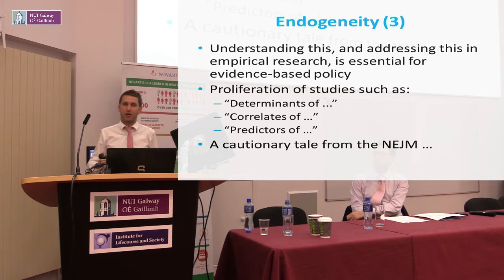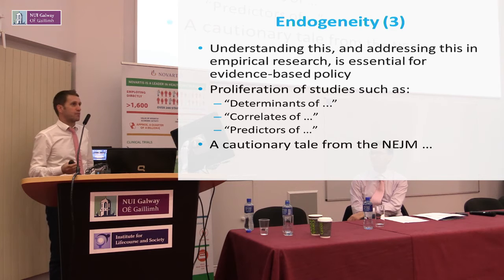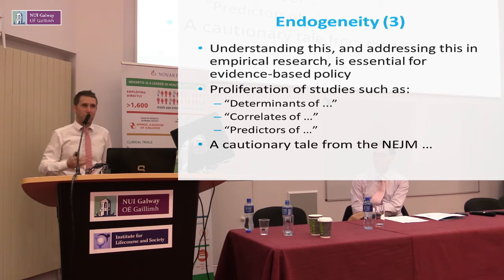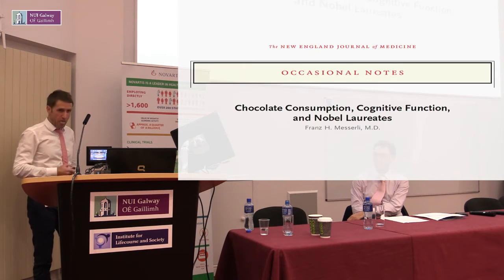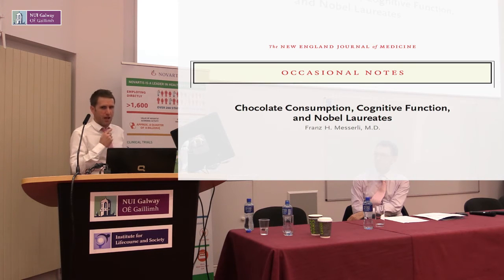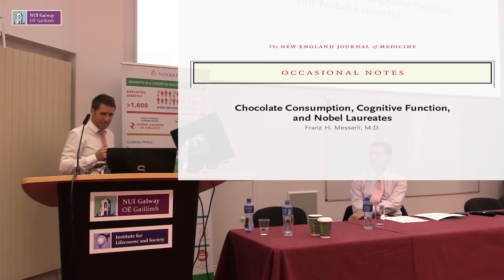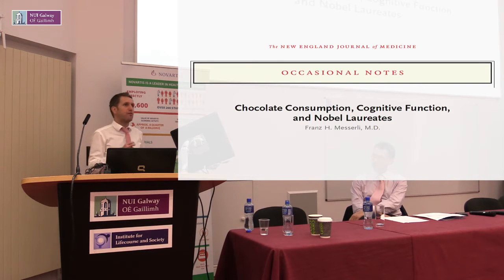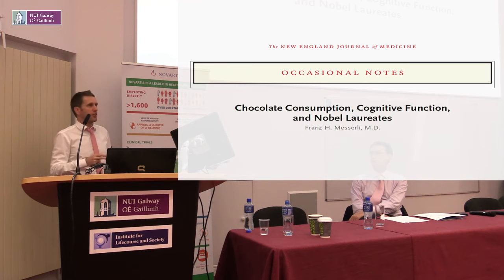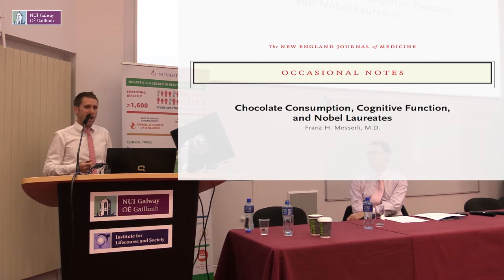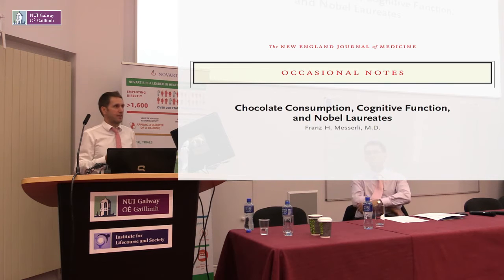Here's a cautionary tale from the New England Journal of Medicine — a highly respected journal with the highest impact factor, the one we all dream about publishing in. This is a 2012 paper by Franz Messerli titled 'Chocolate Consumption, Cognitive Function and Nobel Laureates.' Messerli started with the idea that dietary flavonoids, often found in dark chocolates and other foods, have been associated with improved cognitive ability.